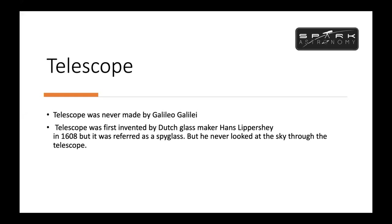Telescope was never made by Galileo — you will always believe that, but it was never true. The first telescope was invented by Dutch glassmaker Hans Lippershey in 1608, and it was referred to as a spyglass. The discovery of the telescope was accidental. In a lot of sciences, discoveries are basically accidental, and the making of the telescope was also an accident.